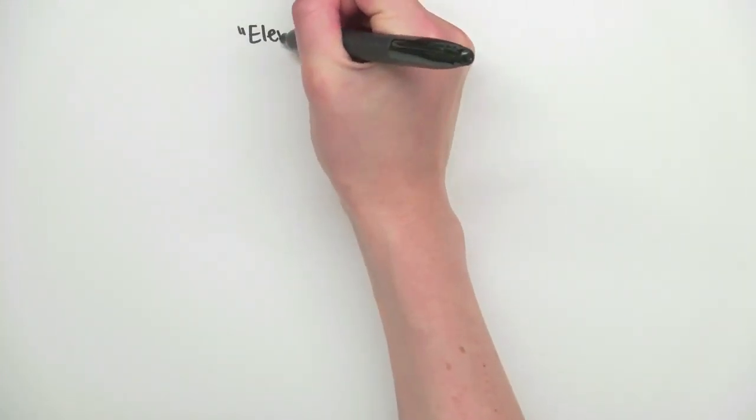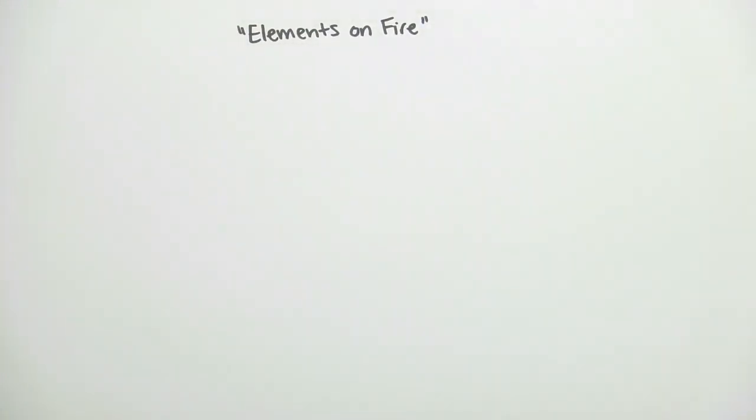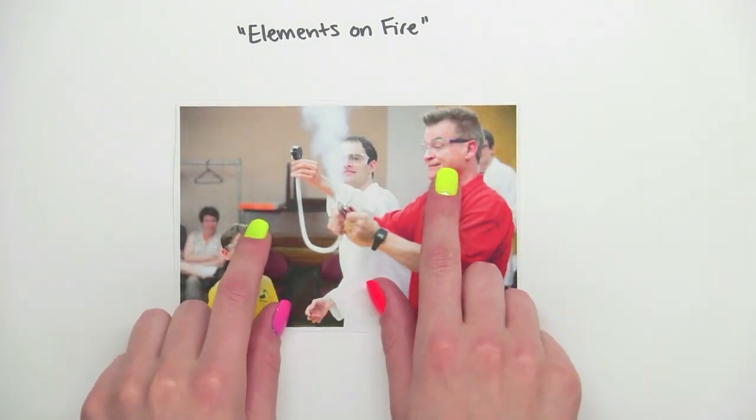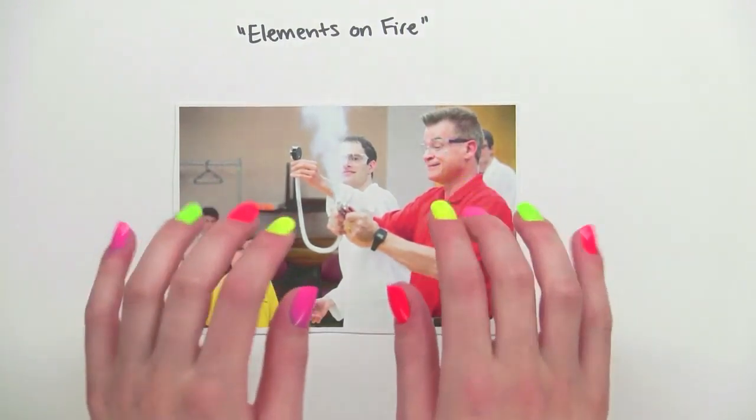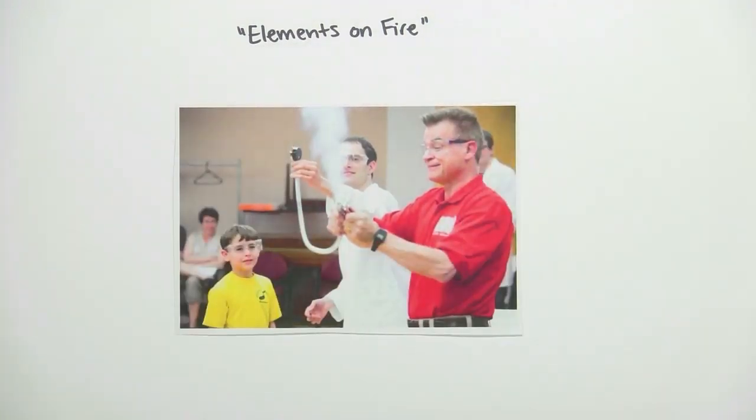Hi, I'm Jessica, and today I'm going to be talking about a chemical demonstration I like to call Elements on Fire. Let's watch as MIT's Dr. John Dolan creates a rainbow of colors at the Cambridge Science Festival.